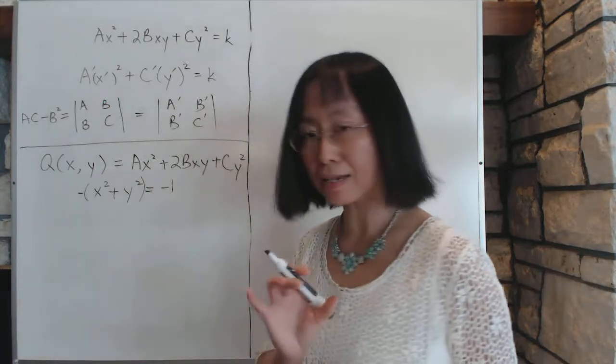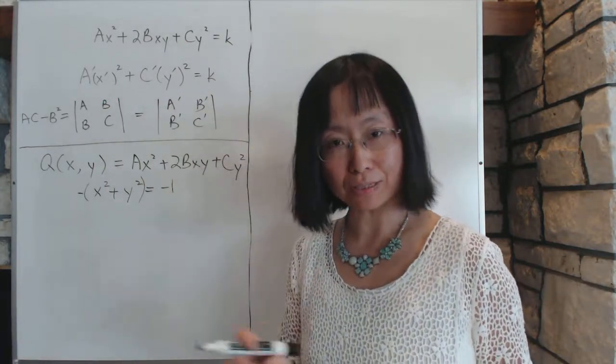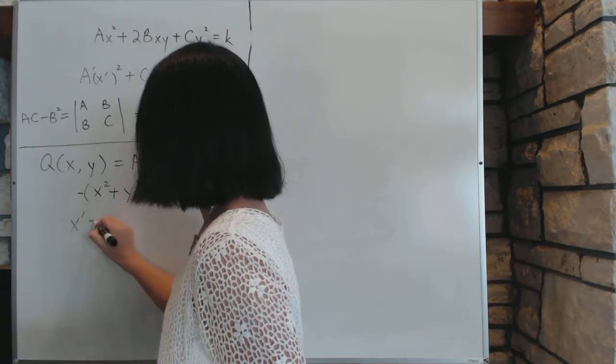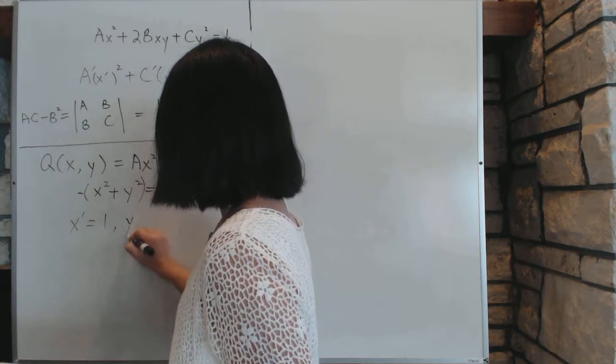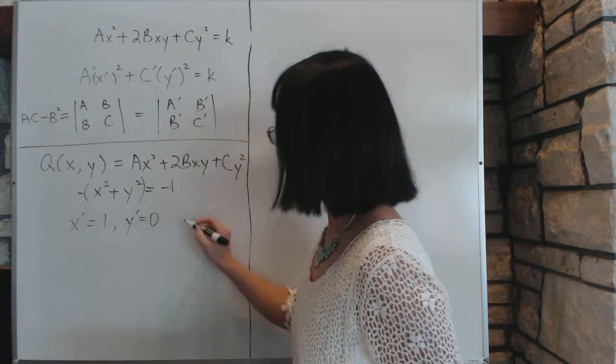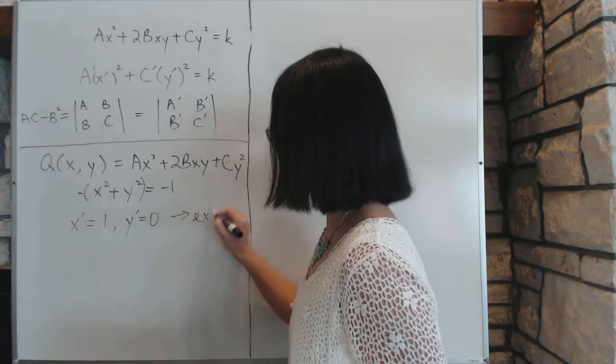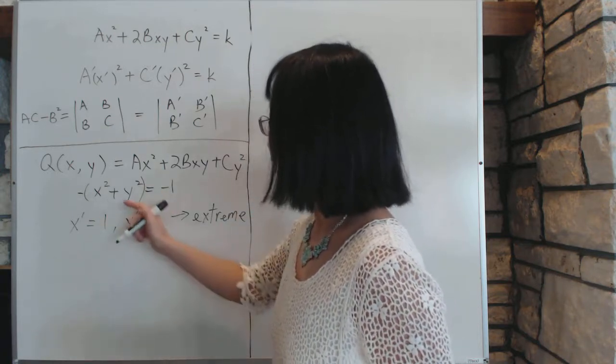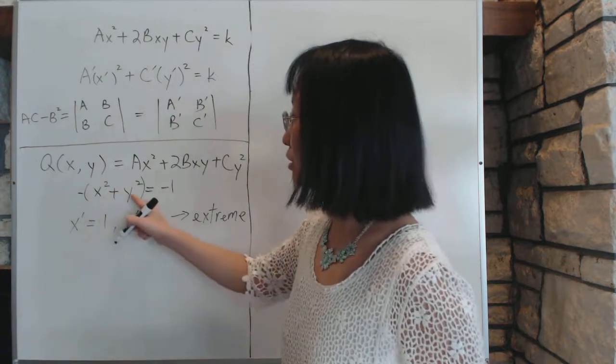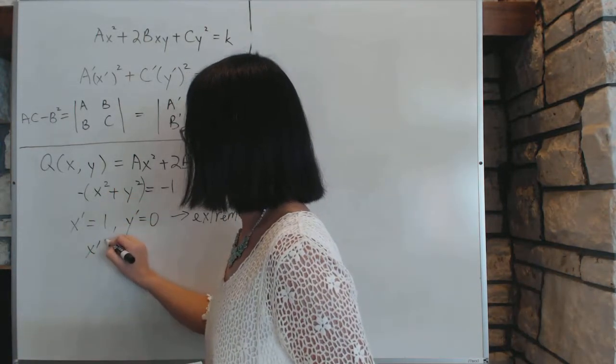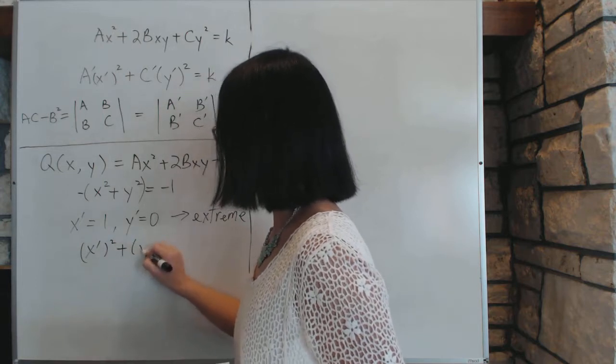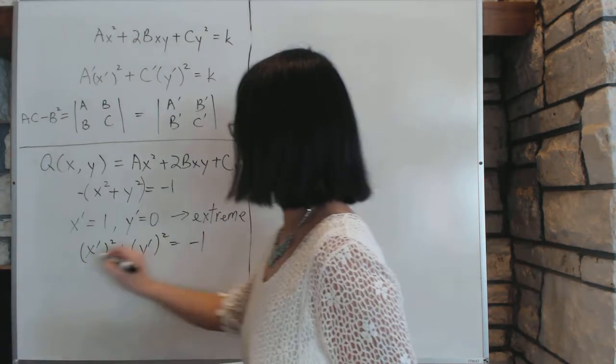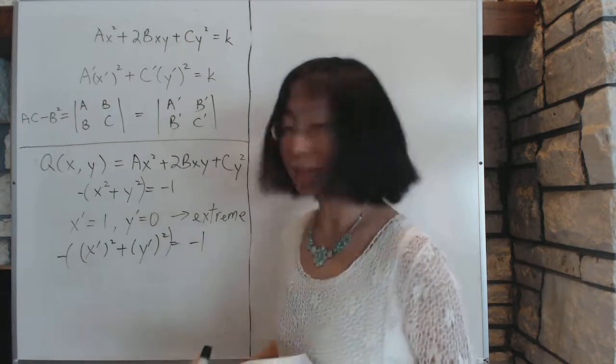Now we will turn the axis right now in such a way, we don't know where, but we know this is possible, such that the new system will be the x prime, y prime system. And we want x prime equal to 1, y prime equal to 0, be a point where the extreme value takes place. This is on the unit circle we're talking about, so on the new unit circle. After we turn, the new unit circle will look like this: x prime squared plus y prime squared equal to 1.